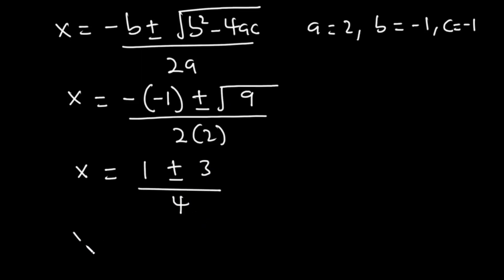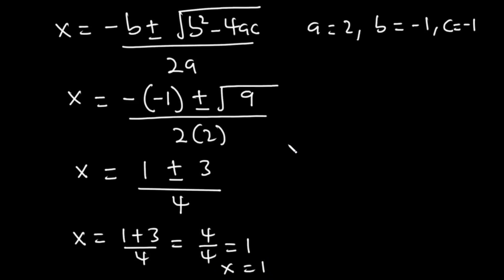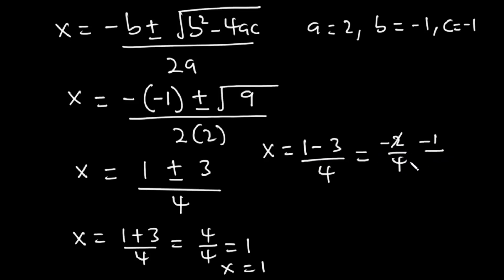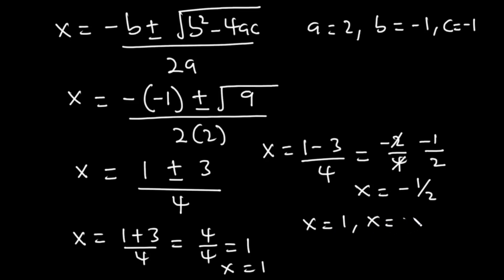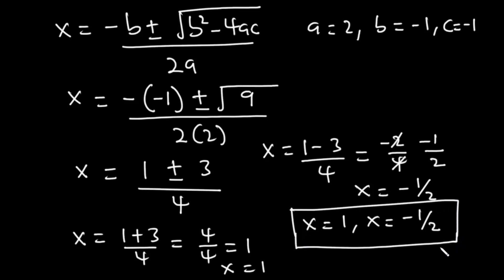The first solution is x equals 1 plus 3 divided by 4. 1 plus 3 is 4, and 4 divided by 4 equals 1, so x equals 1. The second solution is x equals 1 minus 3 divided by 4. 1 minus 3 is negative 2 divided by 4, so x equals negative 1 over 2. So the quadratic equation has two real and different roots — or two distinct roots.